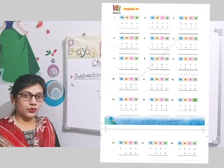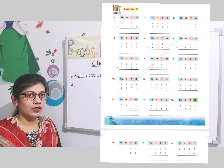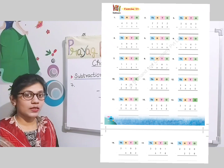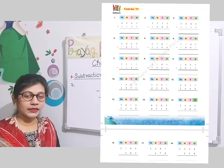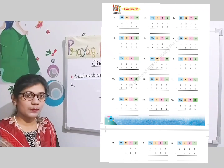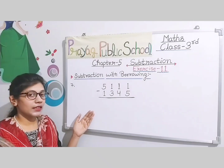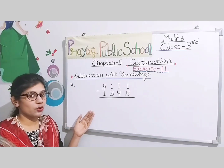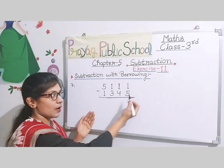Students, open your maths book to page number sixty-eight — there is Exercise number eleven. The question says 'subtract,' meaning you have subtraction problems from question number one to question number eighteen. You have to use borrowing and the subtraction process very carefully.